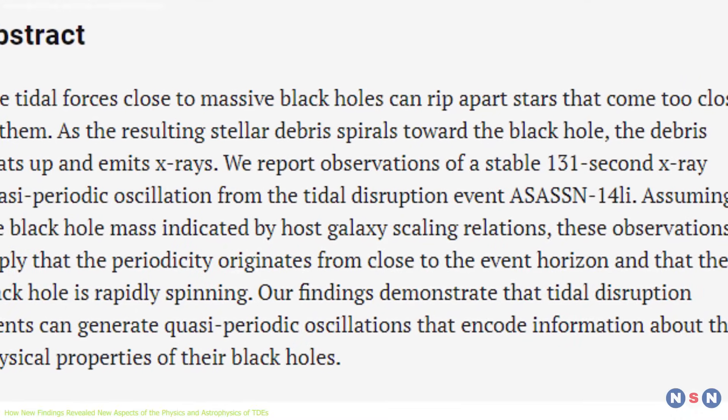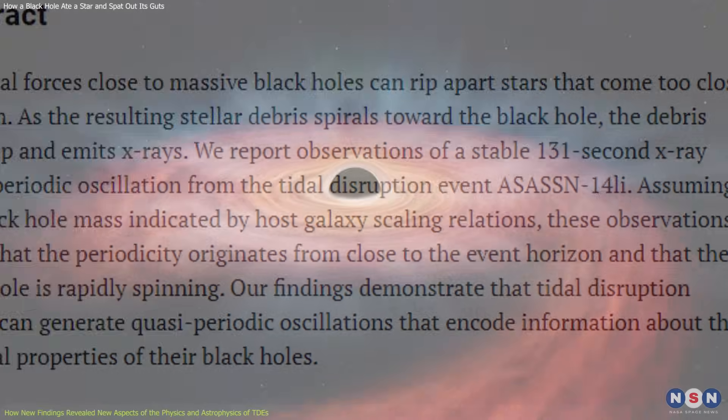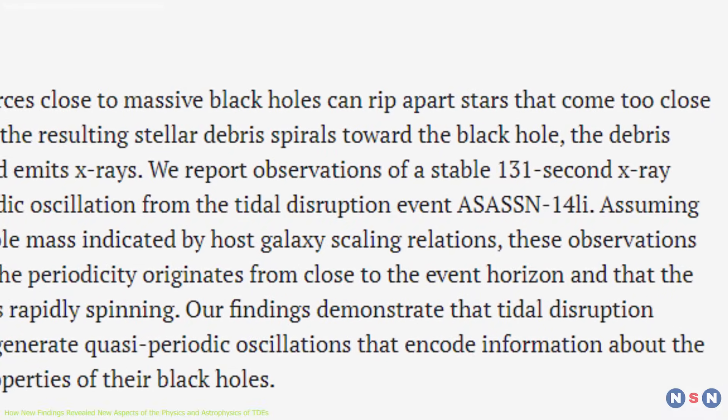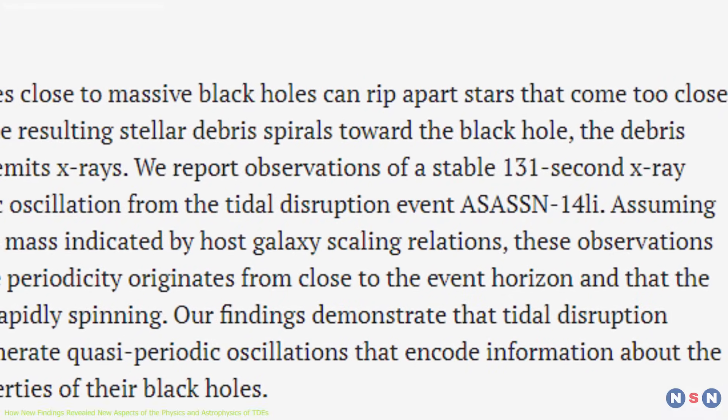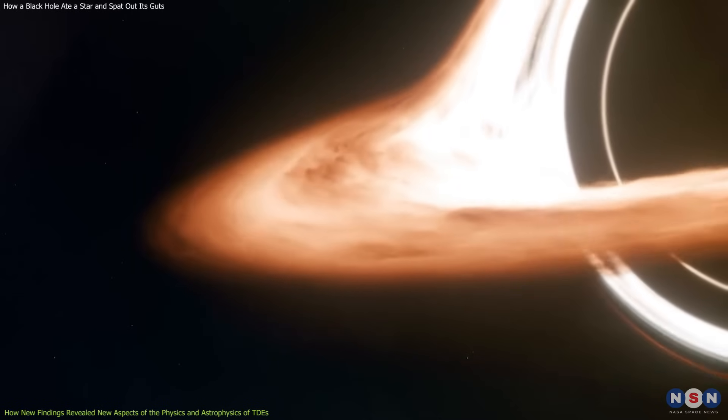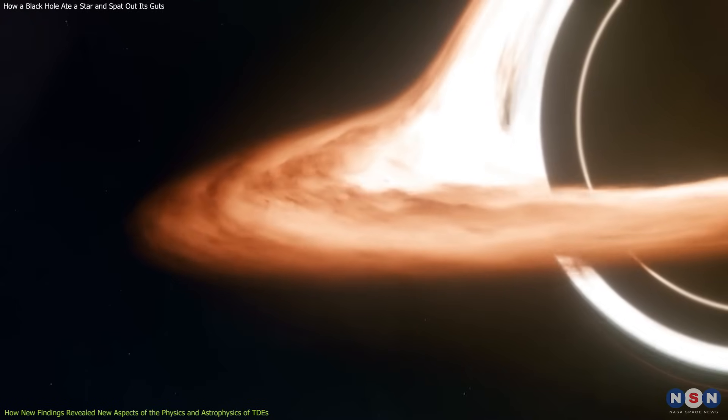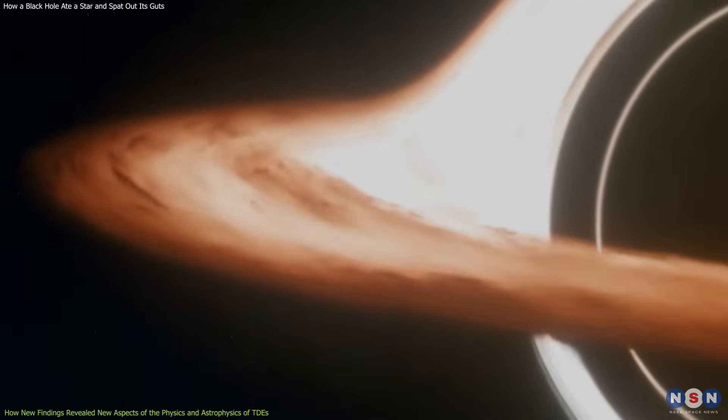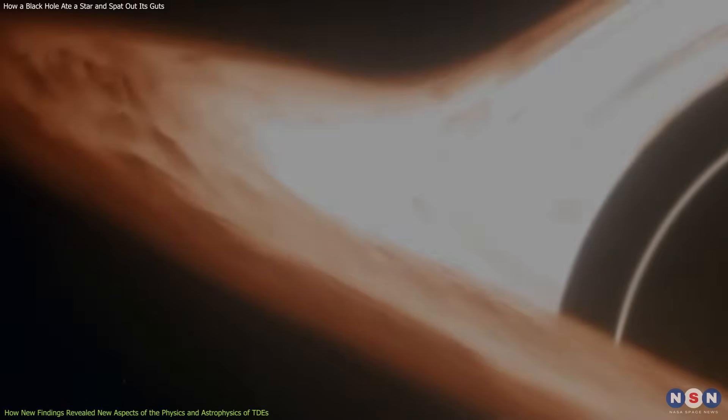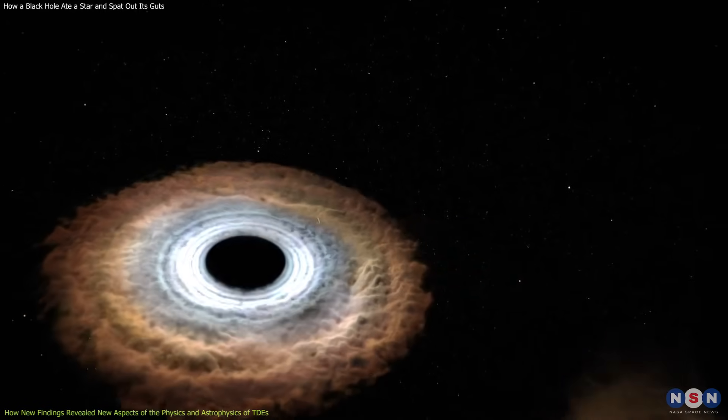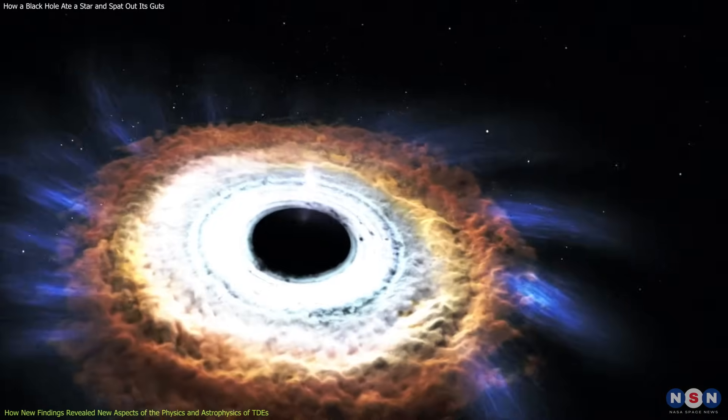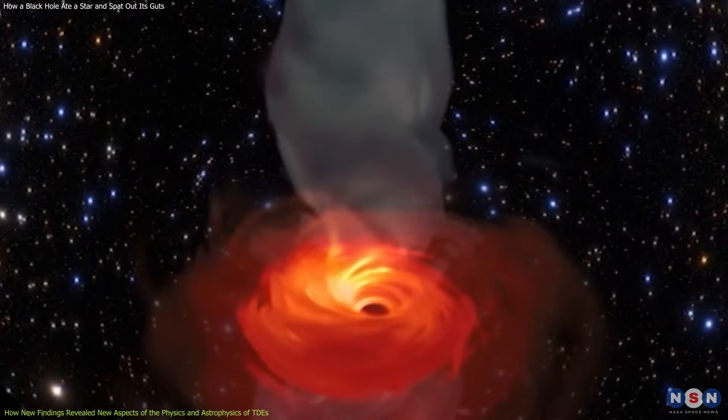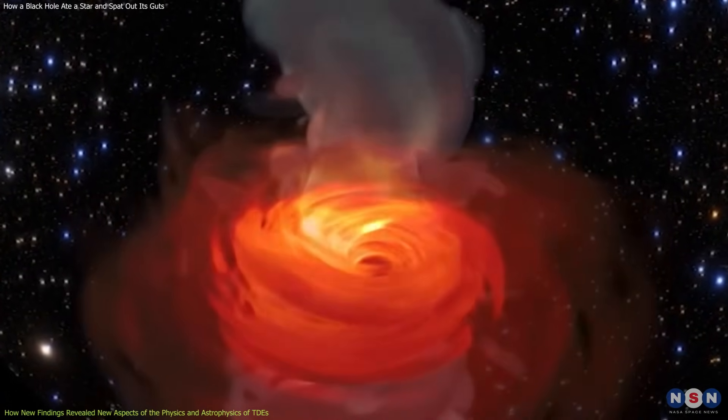Another study by Pasham analyzed the optical and X-ray light curves of ASASN-14Li and found evidence for periodic variations with a period of about 131 days. They interpreted these variations as the result of a precessing accretion disk around the black hole, which changes its orientation and brightness as it orbits. This is the first time that such a phenomenon has been observed in a TDE, and it could provide clues about the geometry and dynamics of the accretion process.